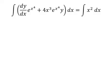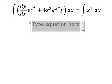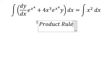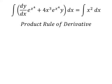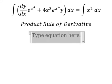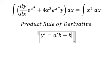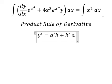So we can use the product rule of derivative. We have first derivative of y equals first derivative of a multiplied by b plus first derivative of b multiplied by a.